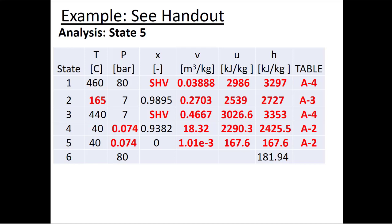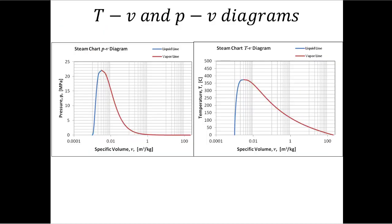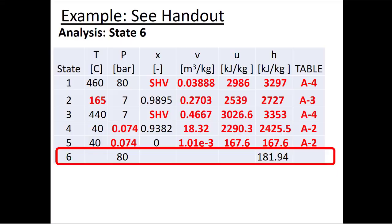Before starting the last state, I fix state five on the graphs. At this low pressure we're right on the blue saturated liquid line on the PV diagram. On the TV diagram we have a low temperature and again we're right on the saturated liquid line.